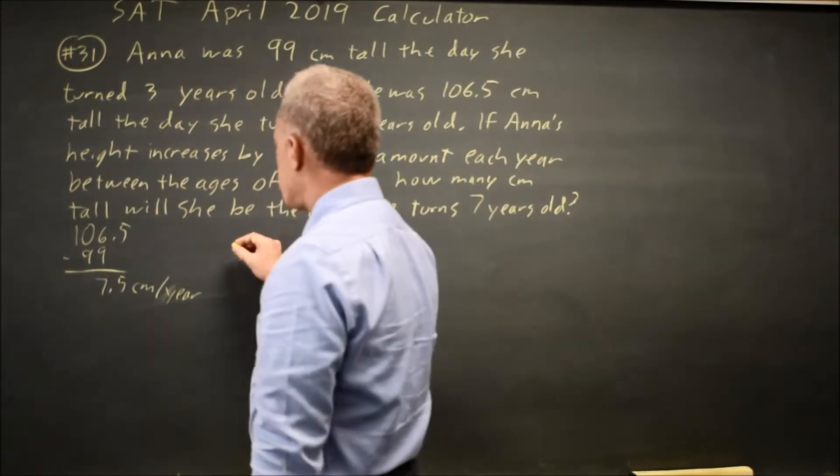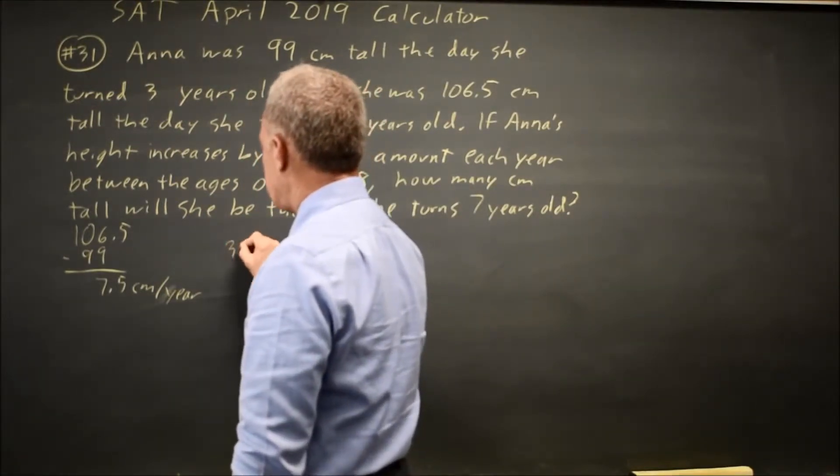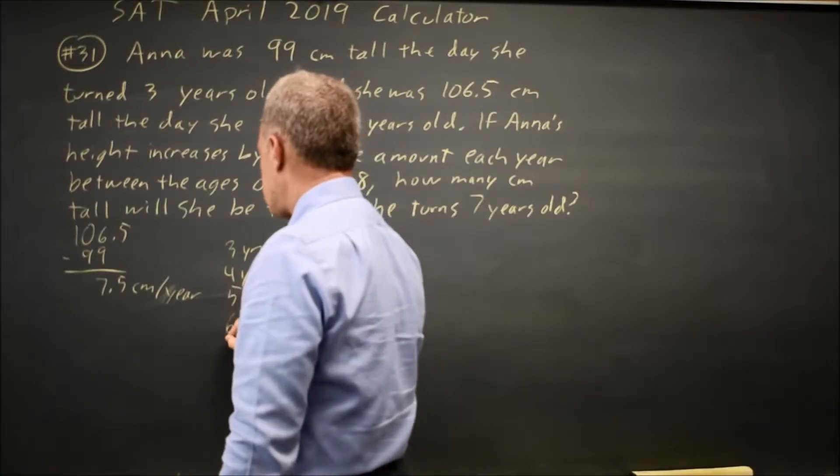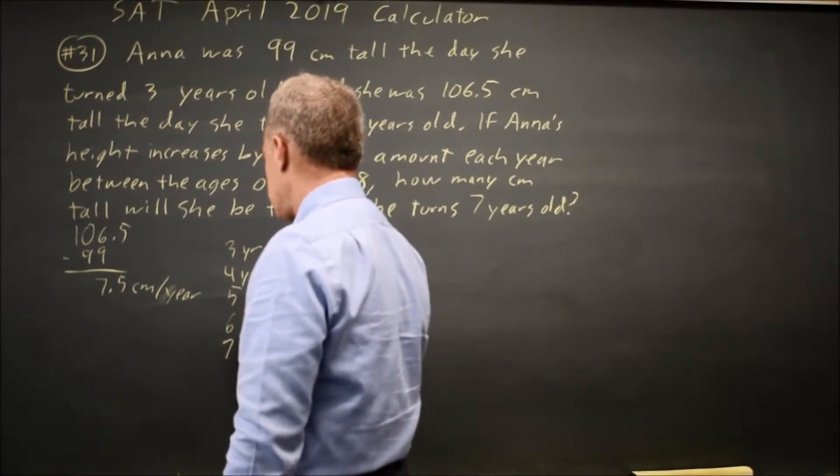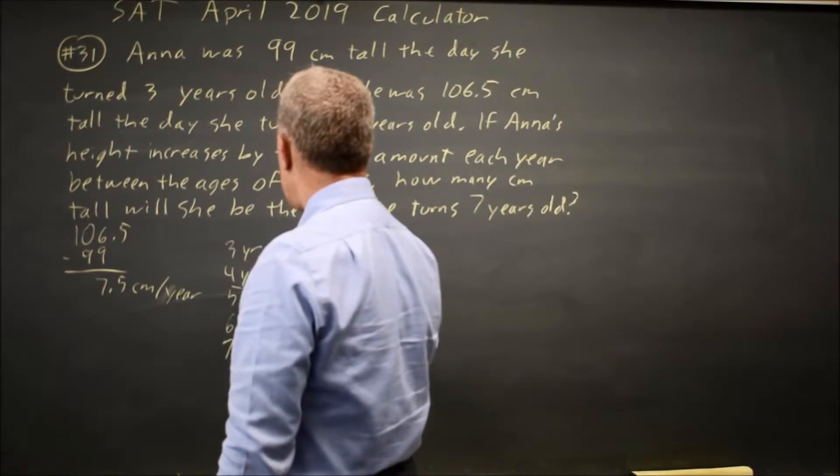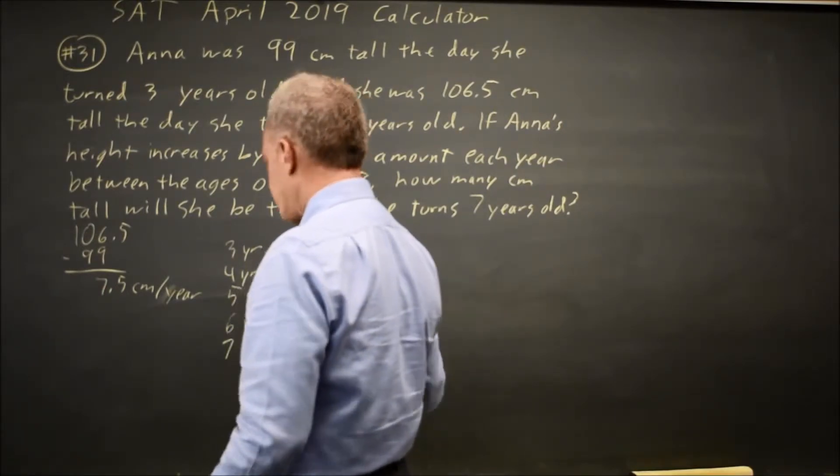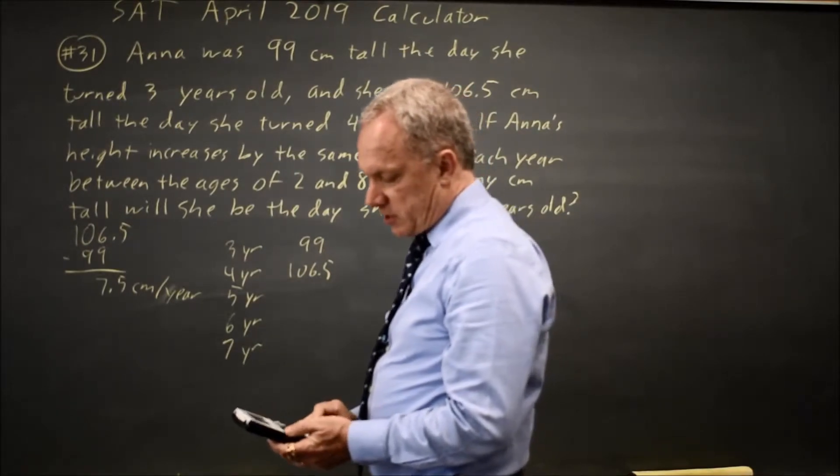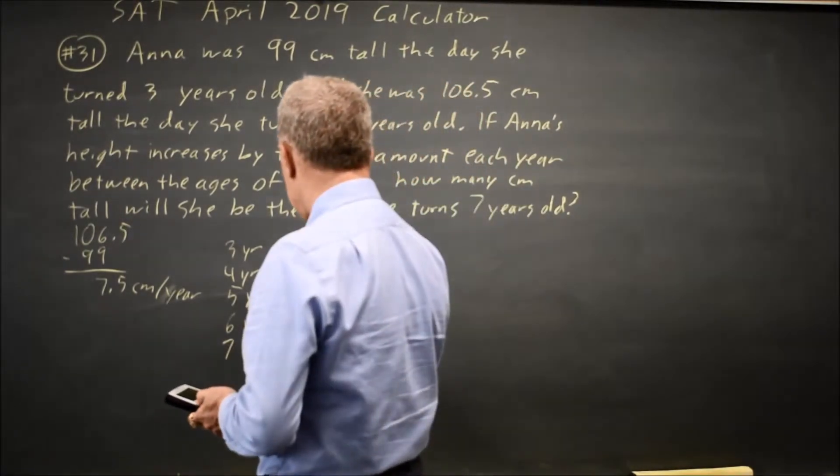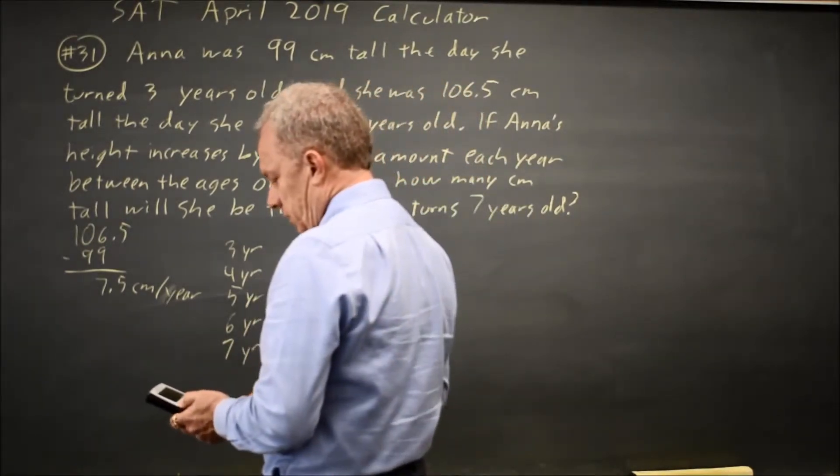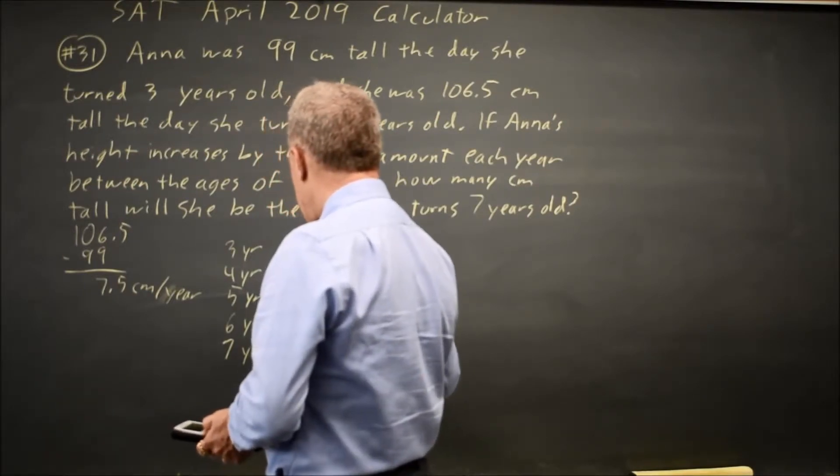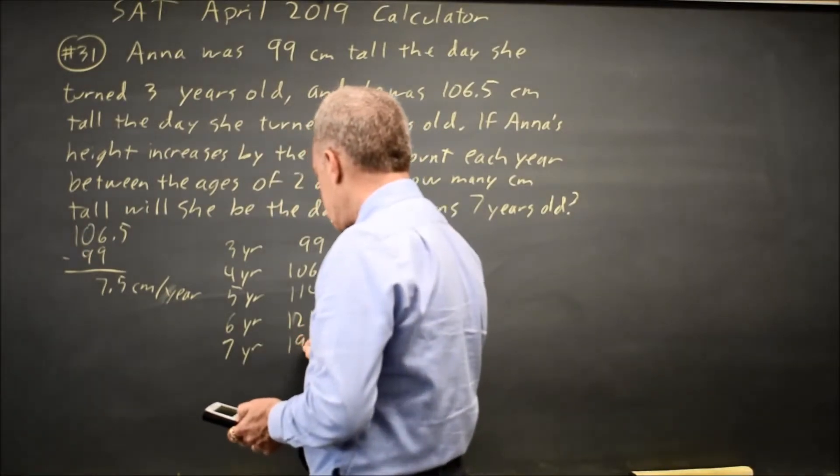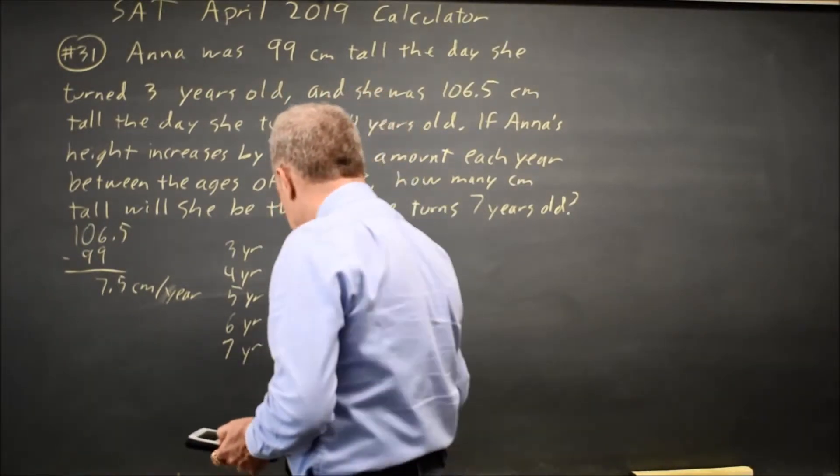One way to do this is just to make a table of values. Anna is at 3 years, 4 years, 5, 6, and 7 years. She is 99, 106.5, and then I can add 7.5 to that to get 114, and again 121.5, and again 129 centimeters.